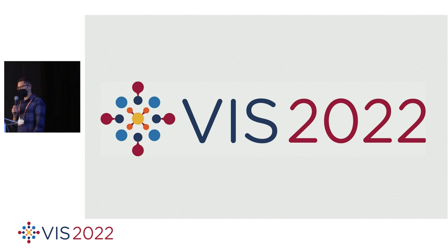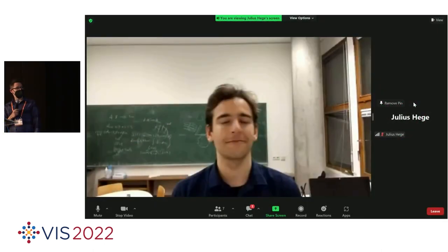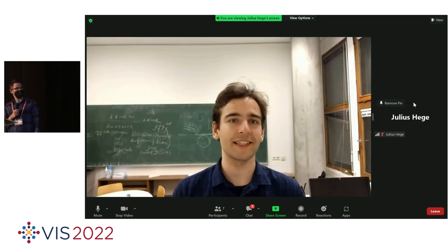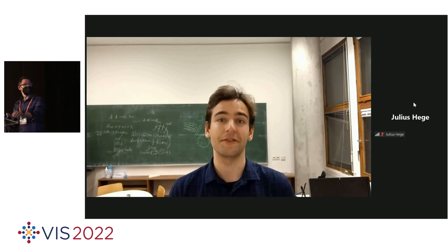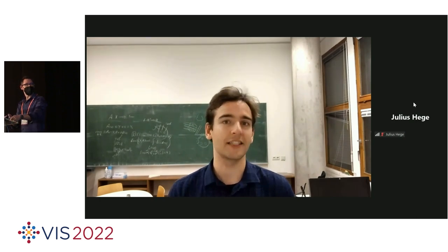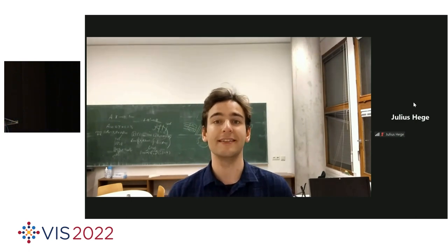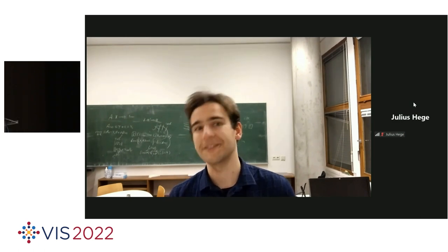We're going to move right along to our next paper, which is Explaining Image Classifiers with Wavelets, presented by Julius. Hello everyone, my name is Julius Hege, and I'm here to present our explorable Explaining Image Classifiers with Wavelets. It's a joint work with Stefan Kulik and Gita Kutiniuk at the Wavelet AI Chair for Mathematical Foundations of Artificial Intelligence at LMU Munich, based on a paper forthcoming in ECSV called Cartoon Explanations for Image Classifiers.